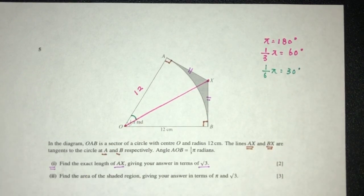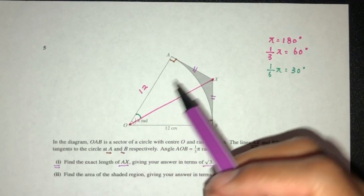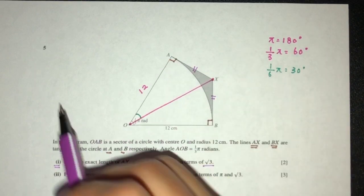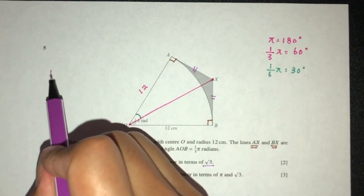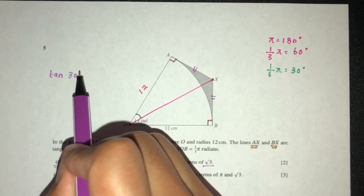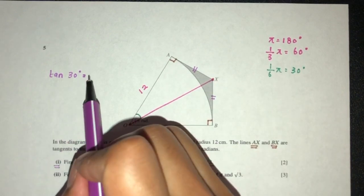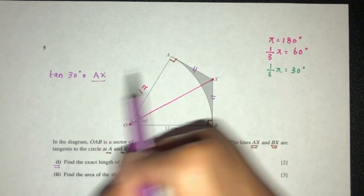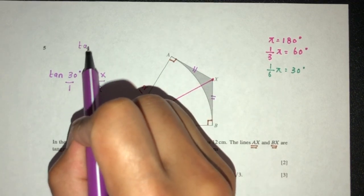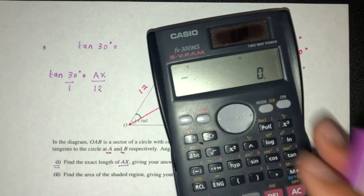By observation, we have a right angle triangle. We are trying to find this side, we know this side, this is the adjacent side. So I can use tan of the angle equals the opposite side, which is AX, over the adjacent side, 12. It is always advised to know the exact value.